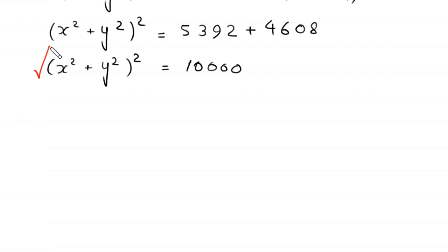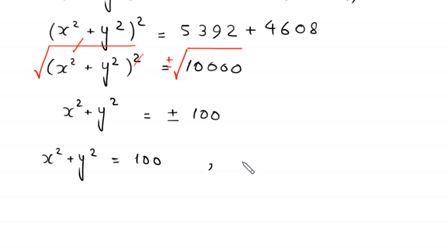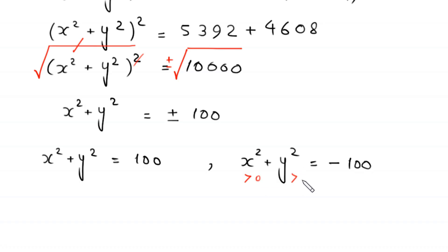Now we take the square root of both sides. The square root cancels with the square on the left, leaving x squared plus y squared equals plus or minus square root of 10,000, which is 100. So we have x squared plus y squared equals 100, or x squared plus y squared equals negative 100. Since x squared is greater than 0 and y squared is greater than 0, the sum of two positive numbers cannot be negative, so we reject the negative value.